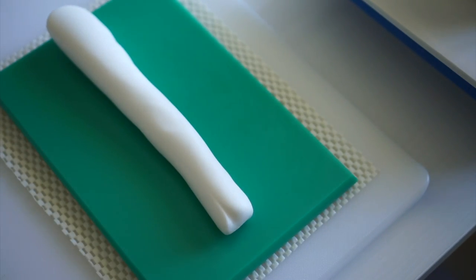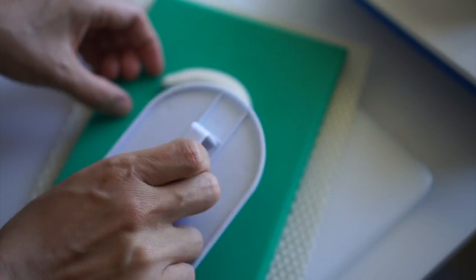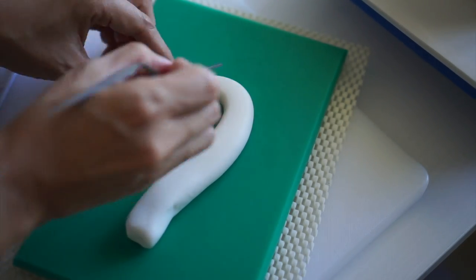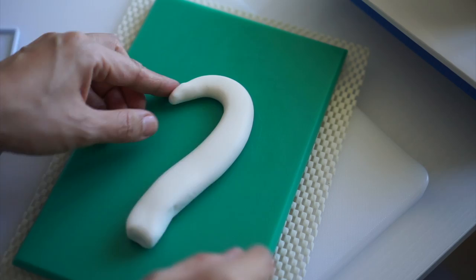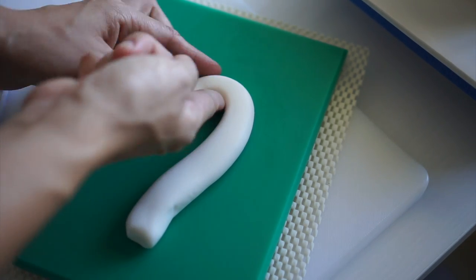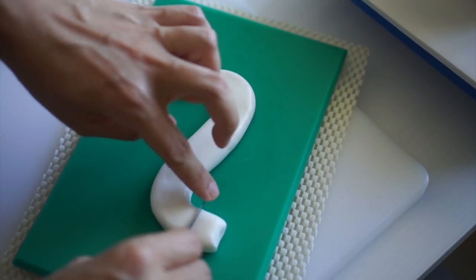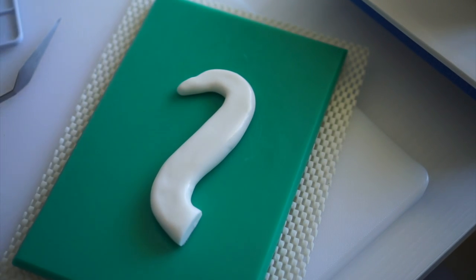For the white swan's neck, we will use fondant. Roll out a piece of white fondant and cut out a long curved shape for the swan's neck using a knife or fondant cutter. You can add other details such as indentation and texture with a ball tool or toothpicks.